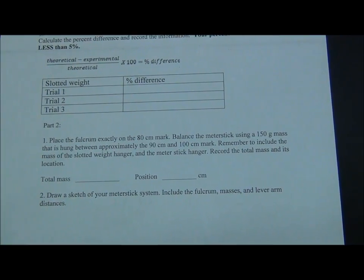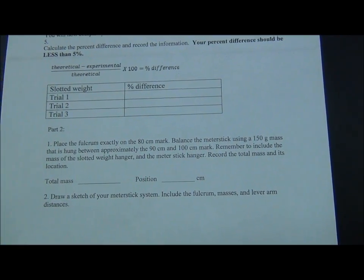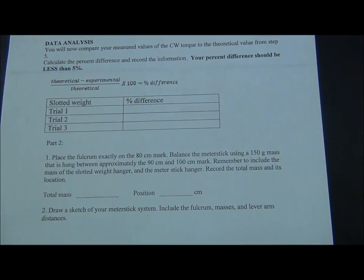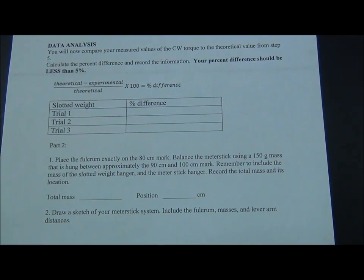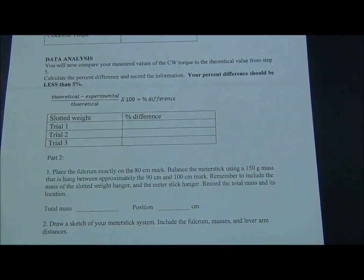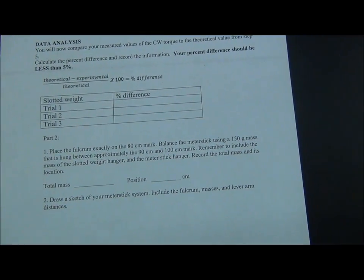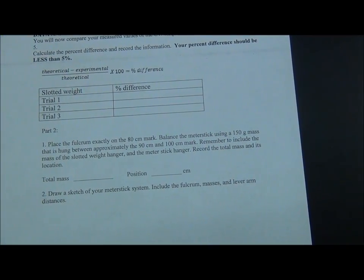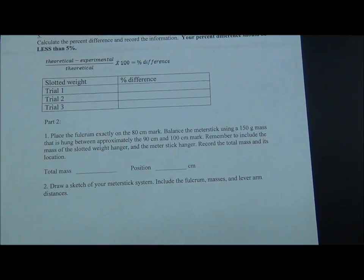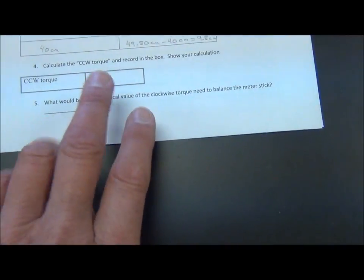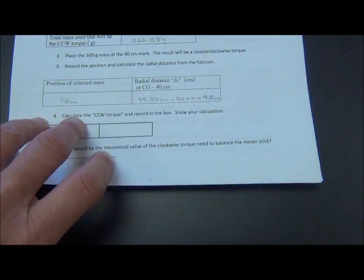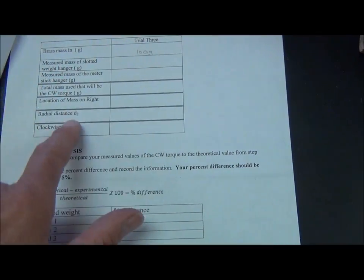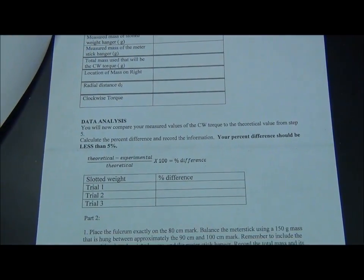After you've completed trial 1 with 400 grams on the right, trial 2 with 200 grams on the right, and trial 3 with 100 grams on the right, please find the percent error by using the theoretical minus the experimental divided by the theoretical torque. If you'll remember, your theoretical torque came from page 1 at the very bottom. Your experimental torque came from each of the data tables as you computed force times distance.